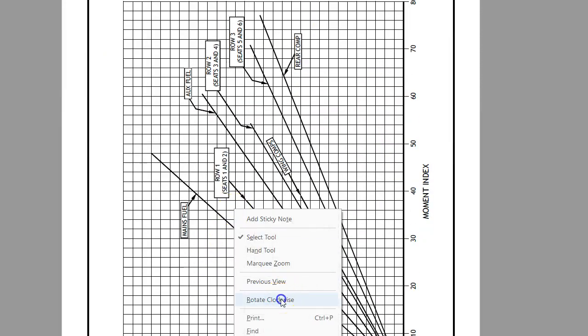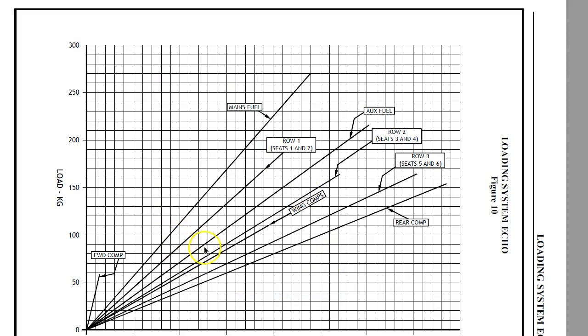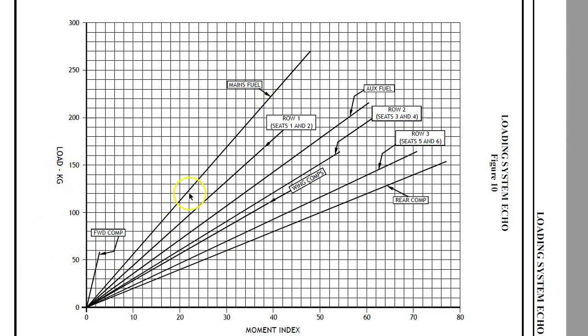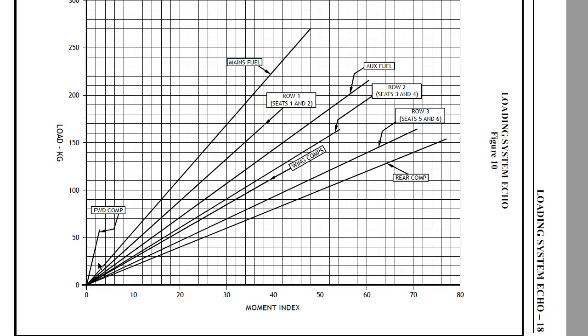You grab the weight of each item in each station. You get the weight, you come across. How much weight have we got in the forward compartment? Work it out. For example, if you had 50 kilos, that would be around about six or seven moment index units.